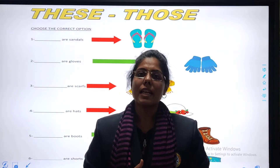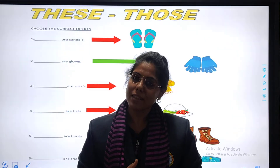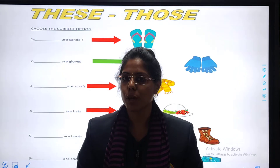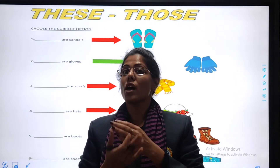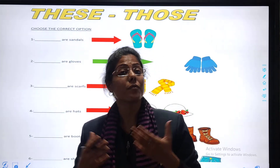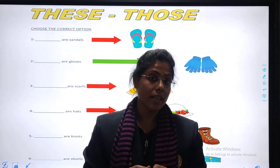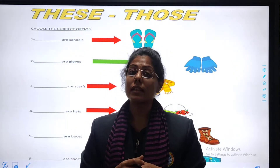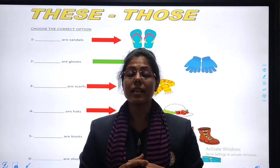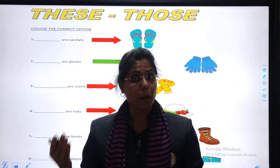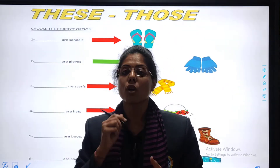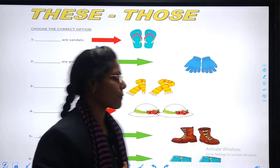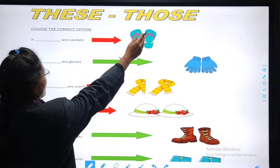So kids, let's do some more practice of 'these' and 'those'. Let's revise again. When we are going to use 'these' — the things which are near to us and many. When the things are many and near to us, we use 'these'. And when the things are many but far, we use 'those'. Okay kids, come on, let's do some practice.